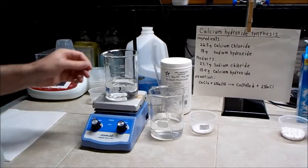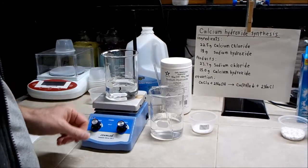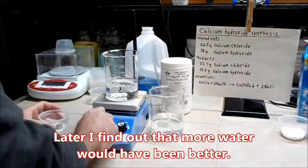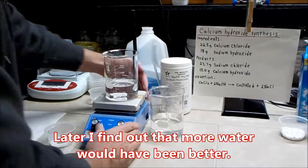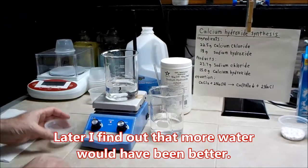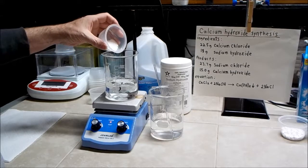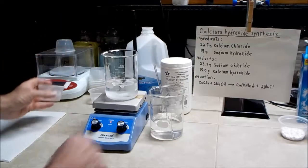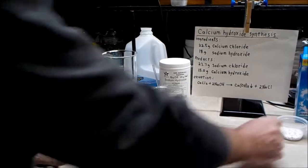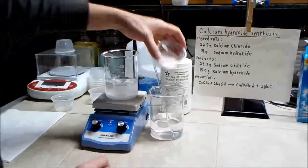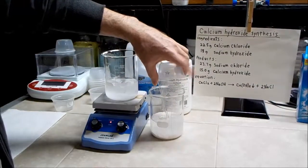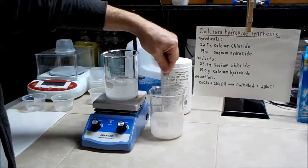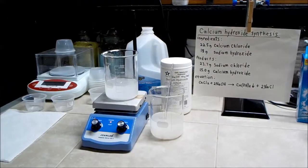So in the beakers here I have two beakers with 200 milliliters of water in each one. So I'll just dump in the first, I'll turn on the stirring, then I'll dump in the sodium hydroxide and get that dissolved. And in the other beaker I'll add the calcium chloride and I'll stir that around. And I'll be back in a minute after everything is dissolved.